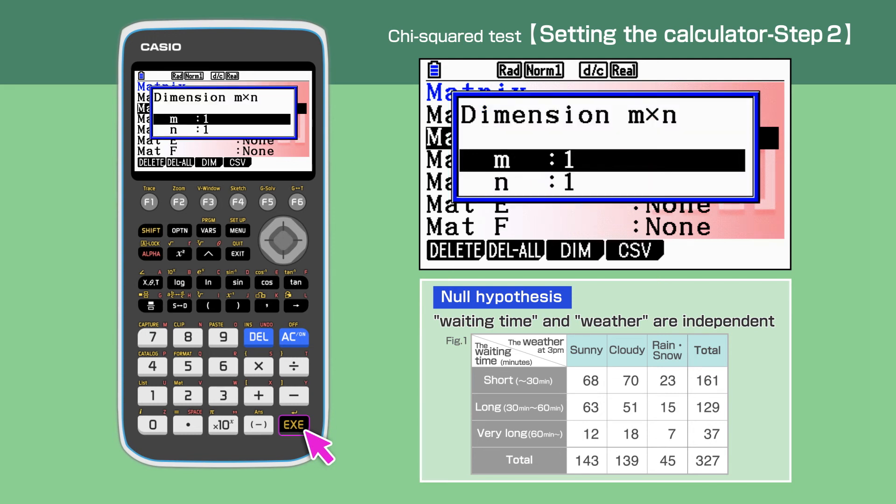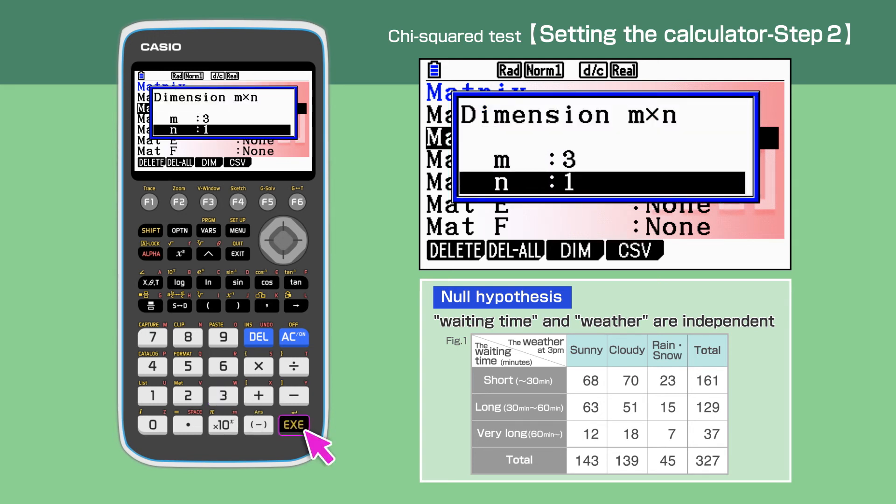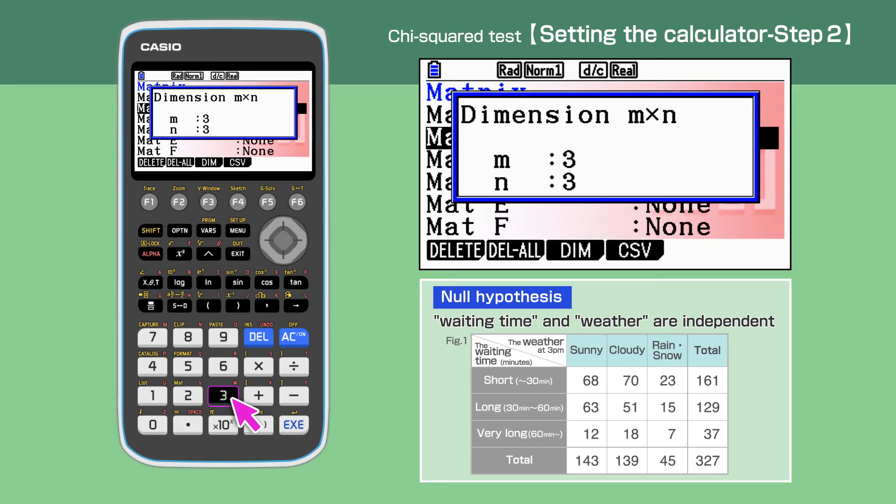Press Execute and enter 3 times 3, like we have just done for Mat A. Pressing Execute gives the expected values already calculated by the calculator.